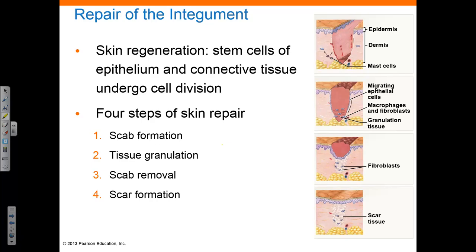When the skin is damaged, it has the ability to regenerate. Stem cells of the epithelium and connective tissues undergo cell division to provide replacement cells for the epidermis and dermis. The process of skin repair has four steps: scab formation, tissue granulation, scab removal, and scar formation. After an injury occurs, mast cells trigger the process of inflammation, and a scab or blood clot forms within a few hours.